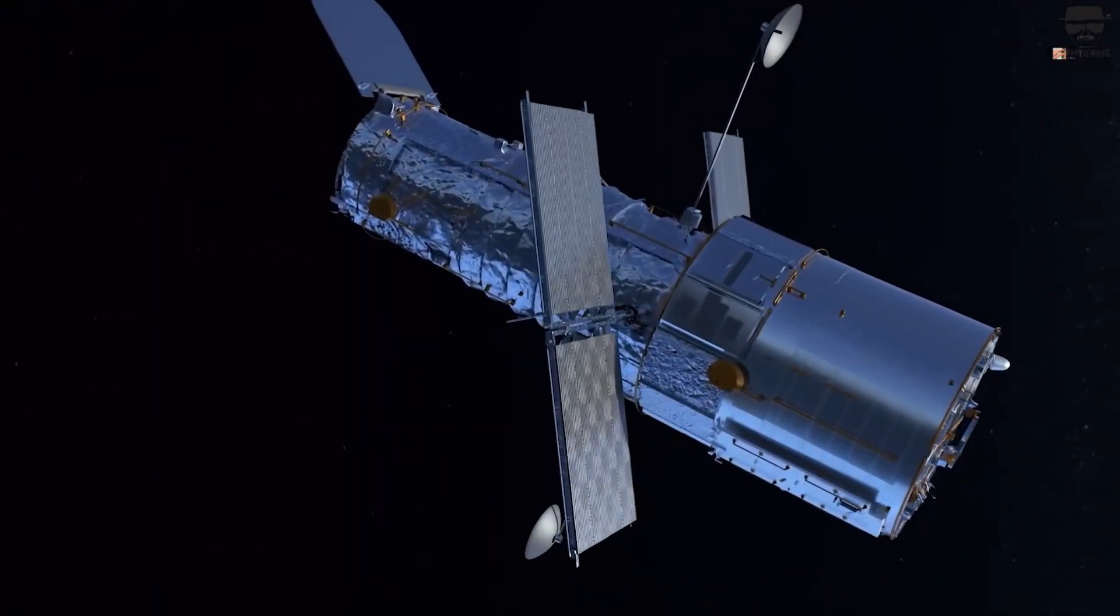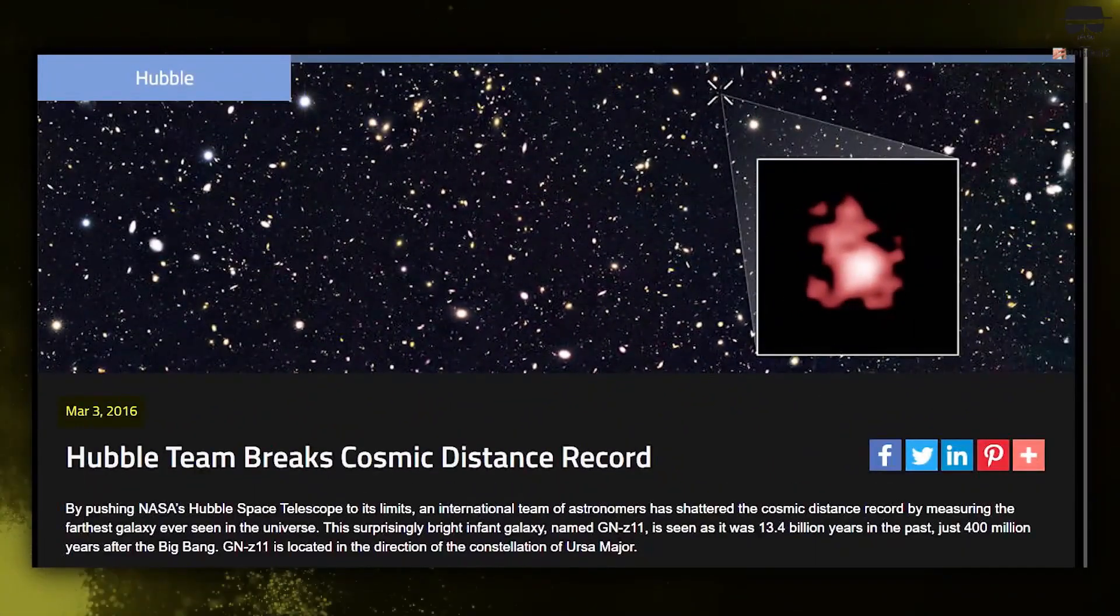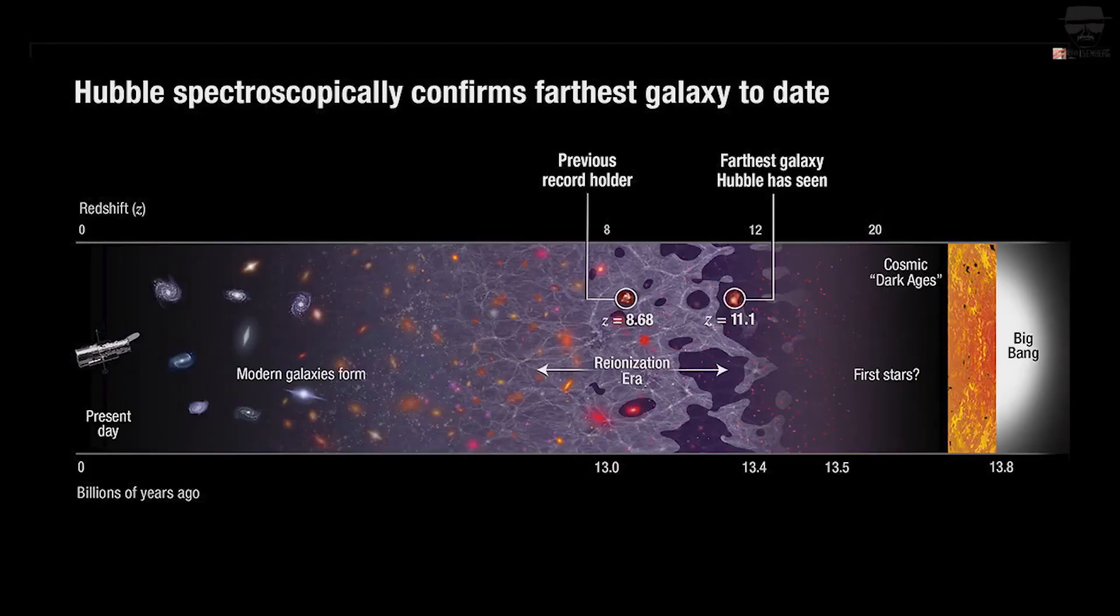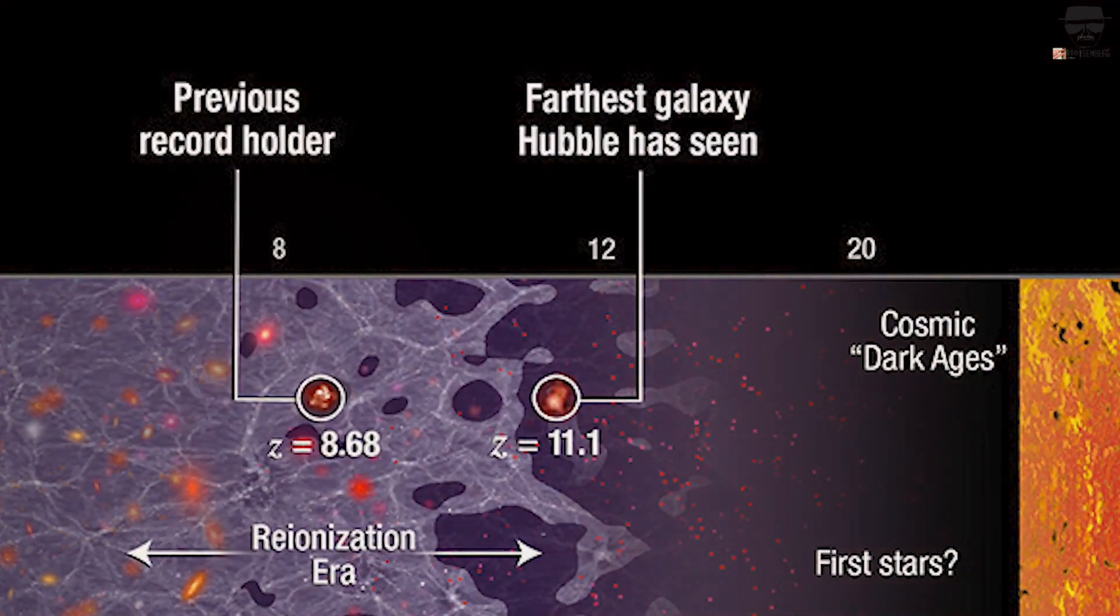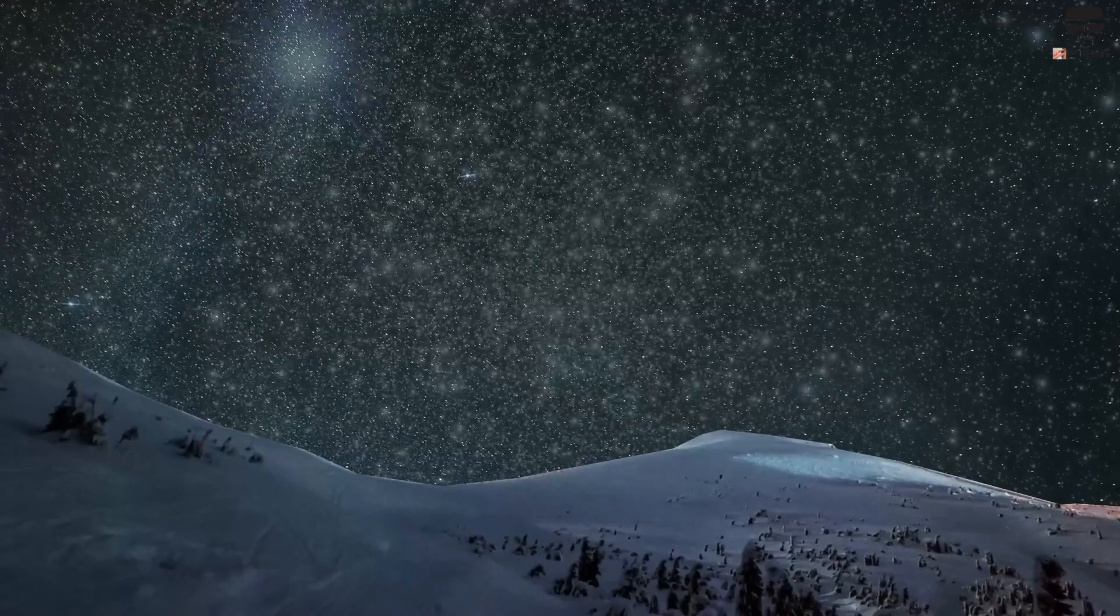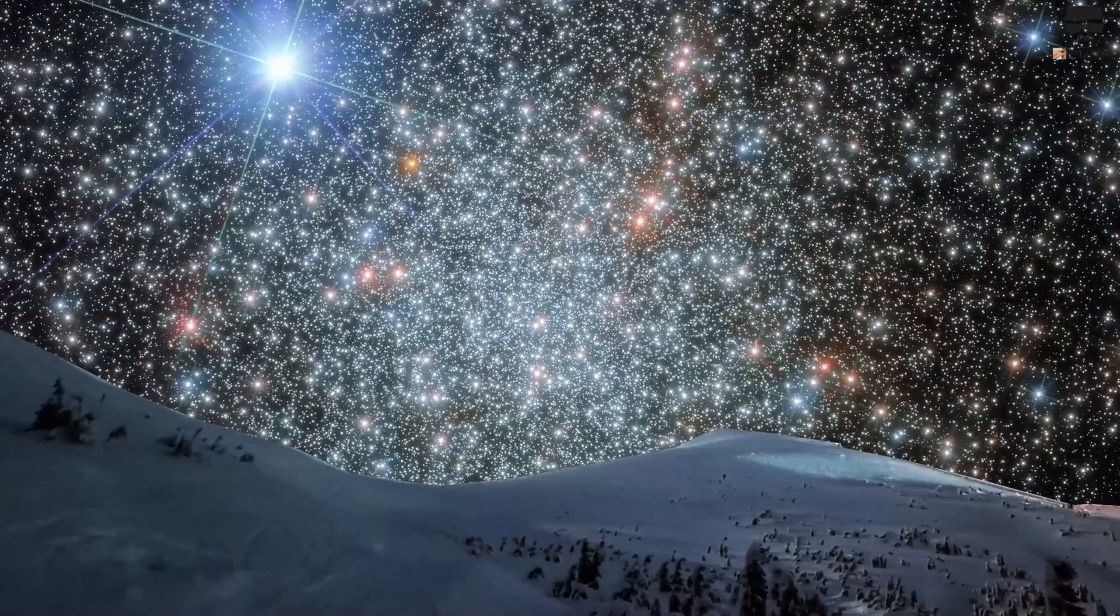But we cannot undermine the contributions of old space observatory gadgets as well, particularly the Hubble Space Telescope and some of its discoveries. Discovered in 2016, GNZ11 is around 13.4 billion years old and is 25 times smaller than our Milky Way galaxy. But remarkably, its star production rate is 20 times greater than our galaxy.